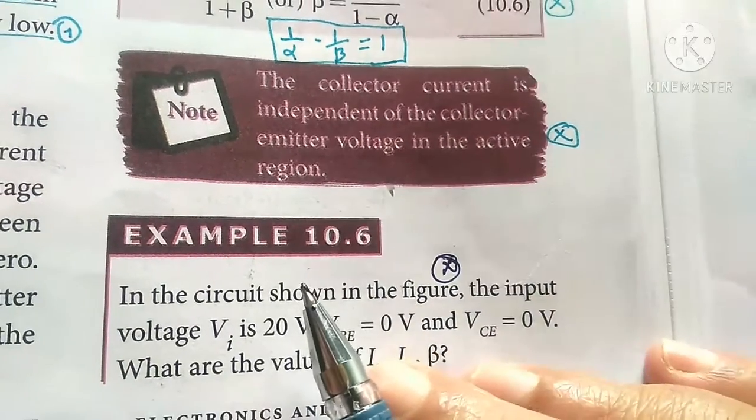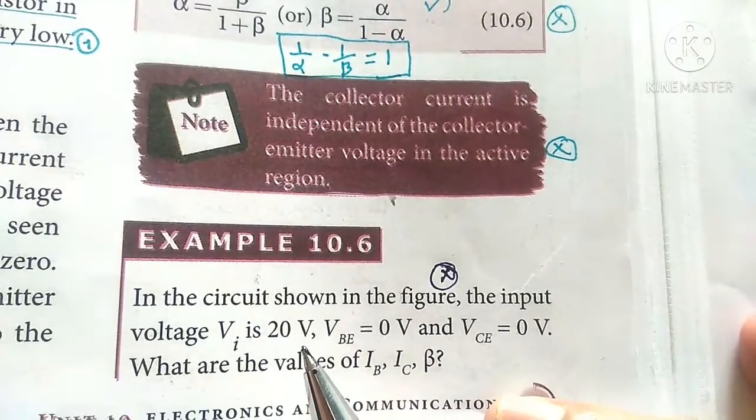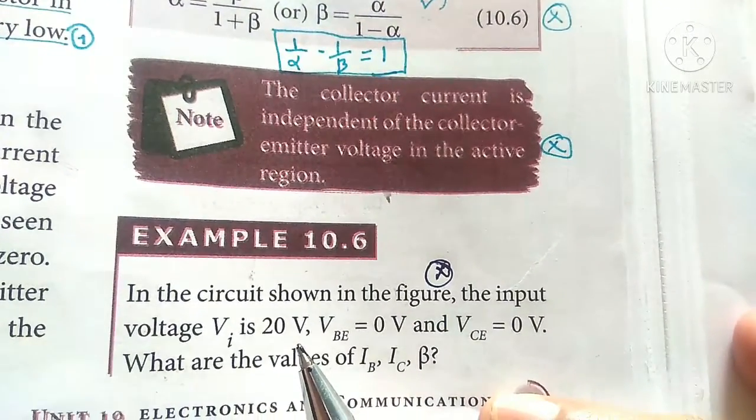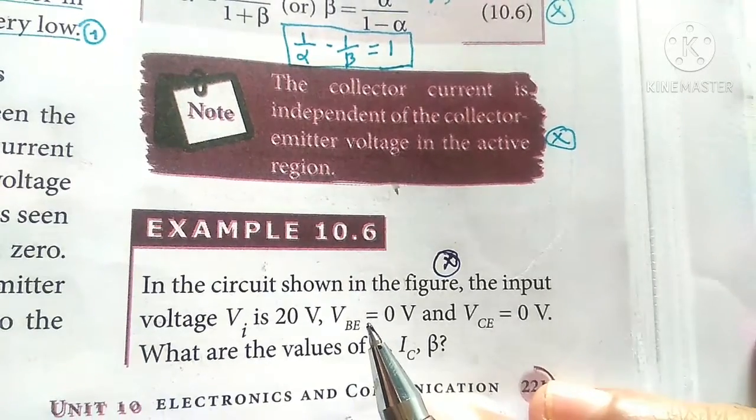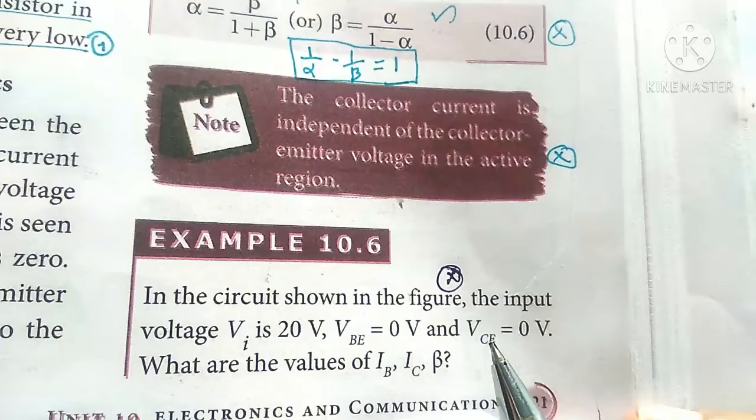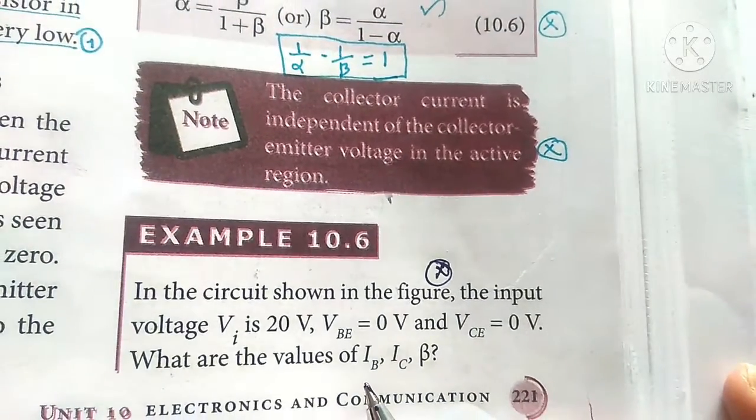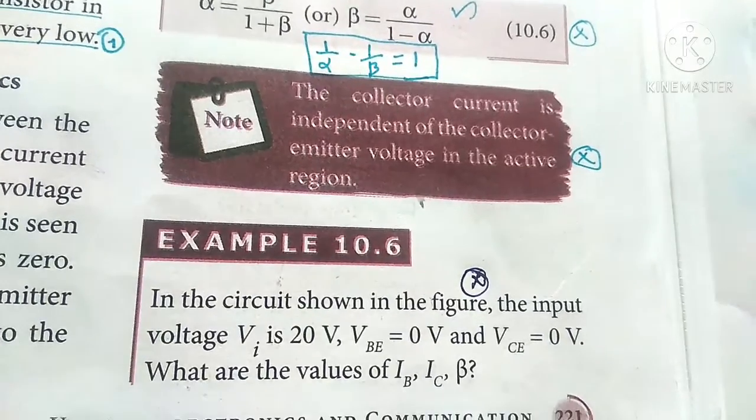Friends, next important example 10.6. In the circuit, input voltage 20 volt, VBE base emitter junction voltage 0 volt and collector emitter junction voltage 0 volt. What are the values of IB, IC, beta?